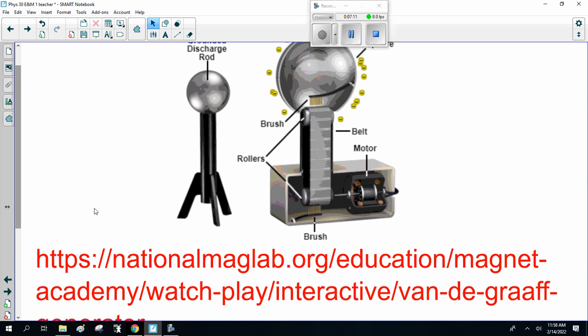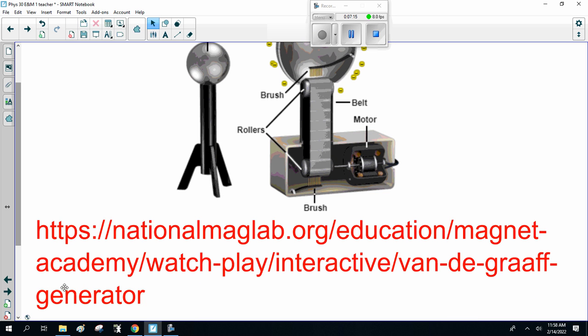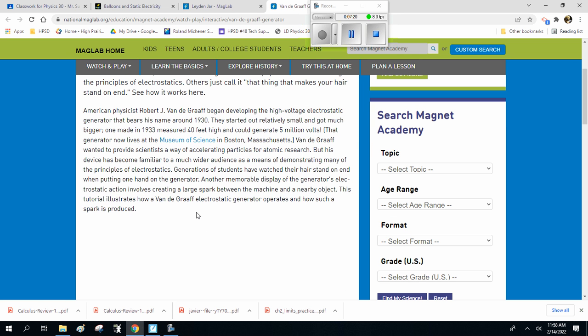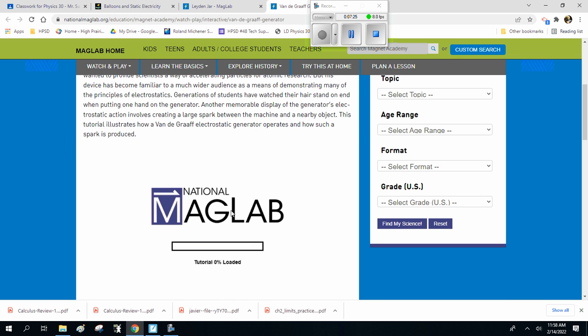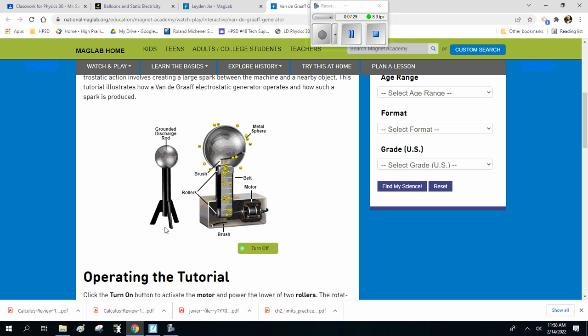The next one is the Van de Graaff generator. If you're in class, we're going to be playing with the Van de Graaff generator and electrocuting each other. Those of you that aren't here, here we go. The Van de Graaff generator. You guys read through that because it's a good history. Here's the Van de Graaff generator, and it's moving electrons.